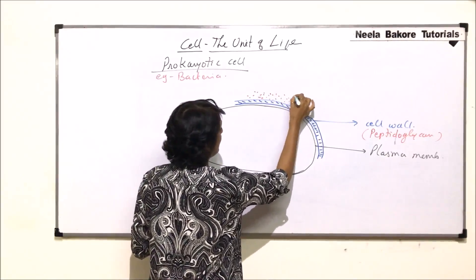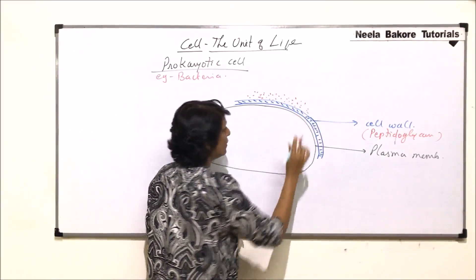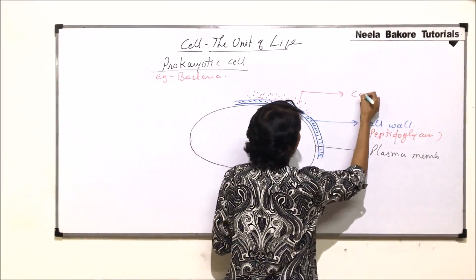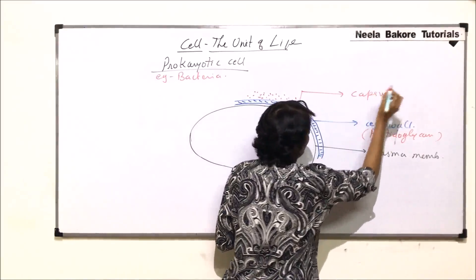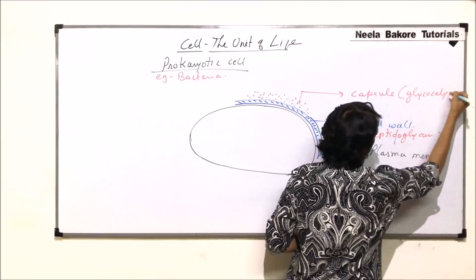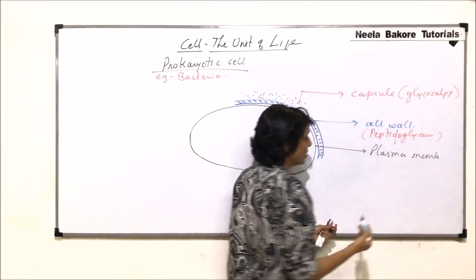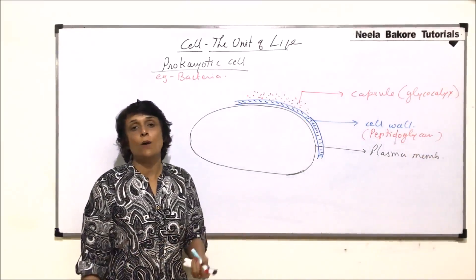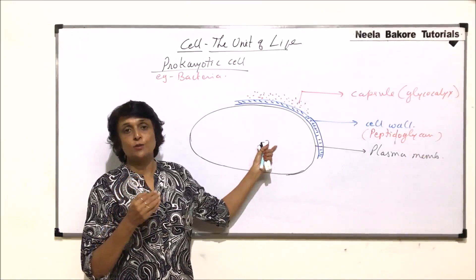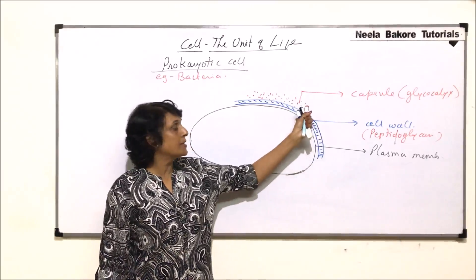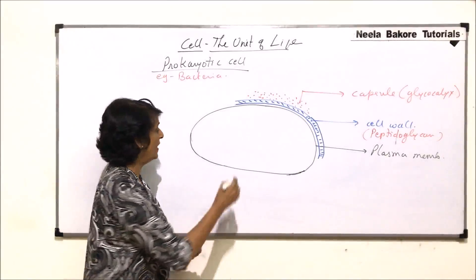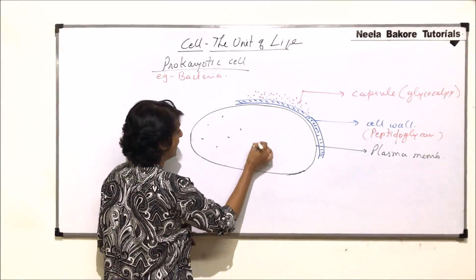Some bacteria have one more layer outside the cell wall, and that layer is a gelatinous capsule which protects the cell from drying or desiccation. This is the capsule, also termed as glycocalyx. This is an additional layer which may be found in certain bacteria. So basically there are two essential layers — plasma membrane and cell wall — and this capsule may or may not be present.